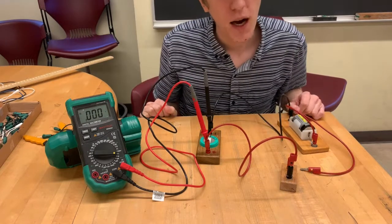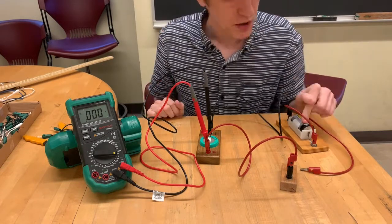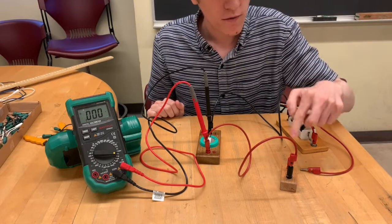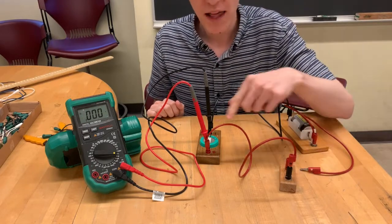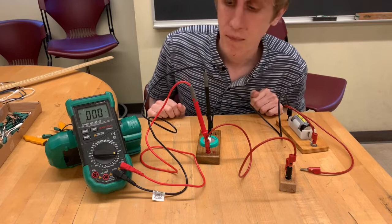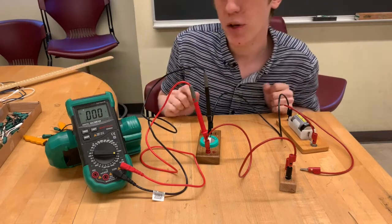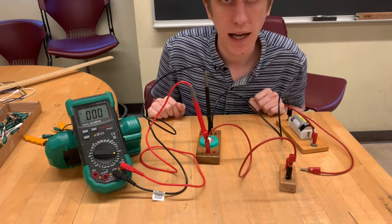The setup of the circuit is as follows. The current will start at the battery, flow through this resistor, then through this capacitor. This voltmeter is measuring the voltage across the capacitor itself.